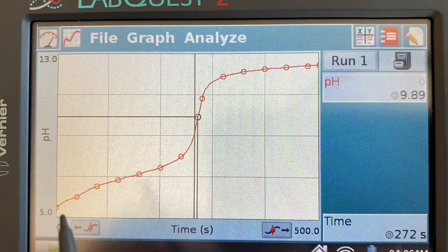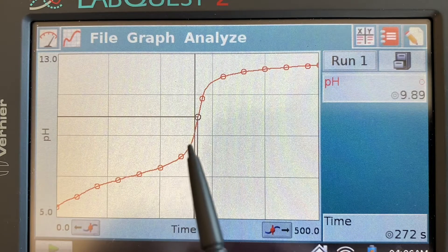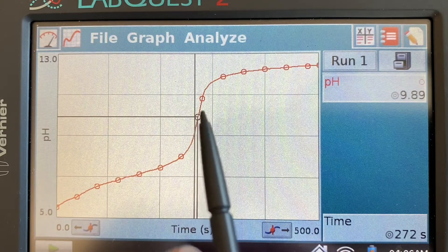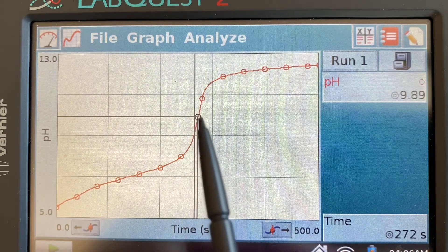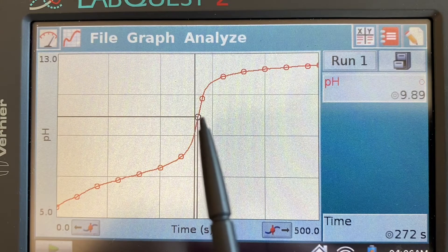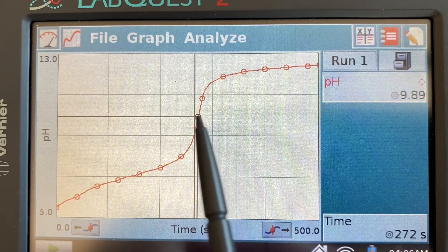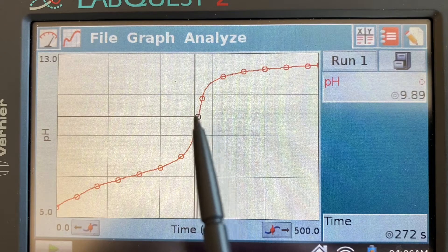If you titrate a weak acid with a strong base you end up with the pH higher than 7 at the equivalence point because at the equivalence point you don't have neutral water only, you have its conjugate base and that actually acts to make the solution basic.